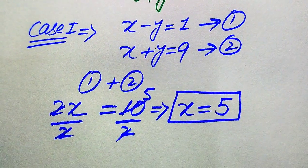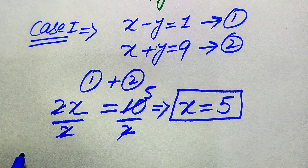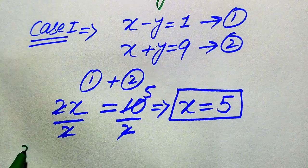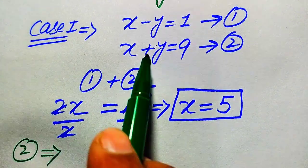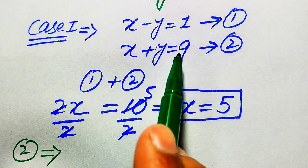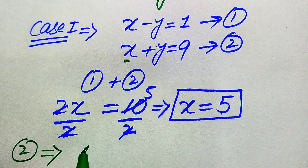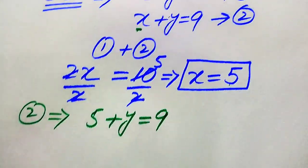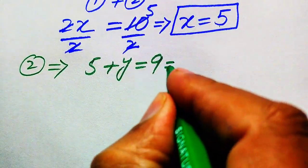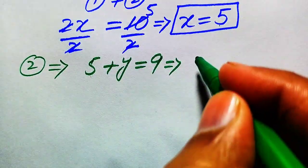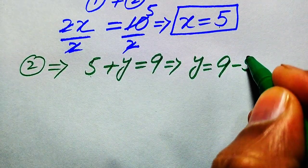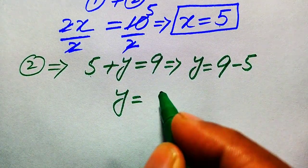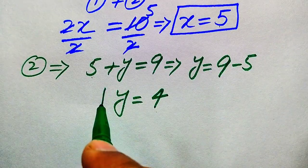Now we substitute x equals 5 into equation 2, which gives 5 plus y equals 9. Moving 5 to the right hand side, we get y equals 9 minus 5, so y equals 4.